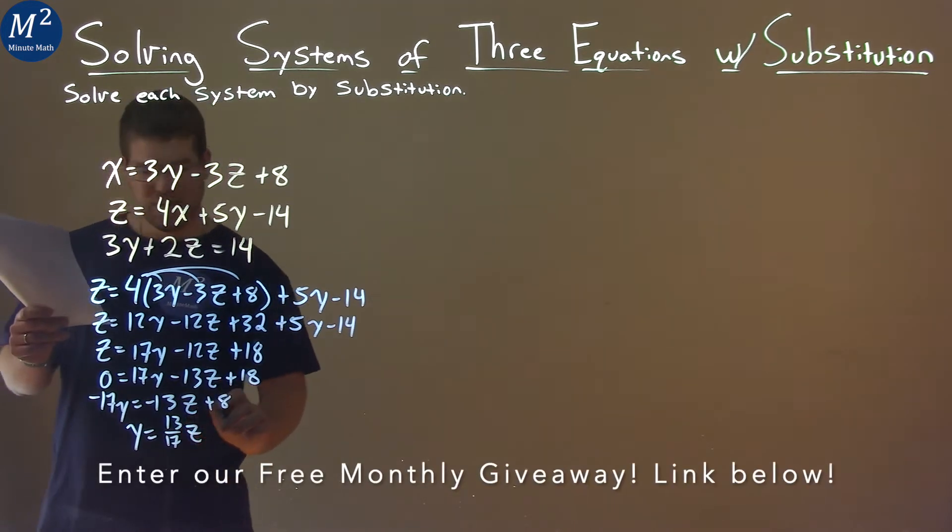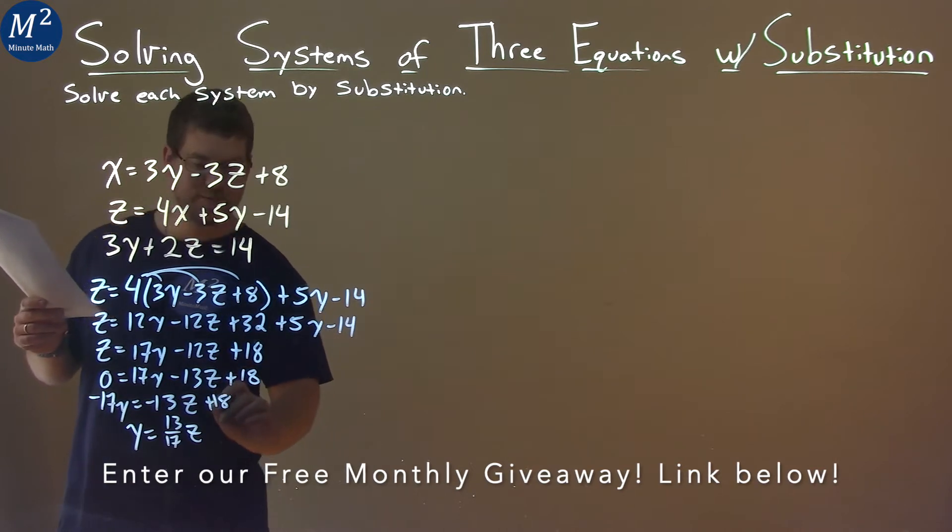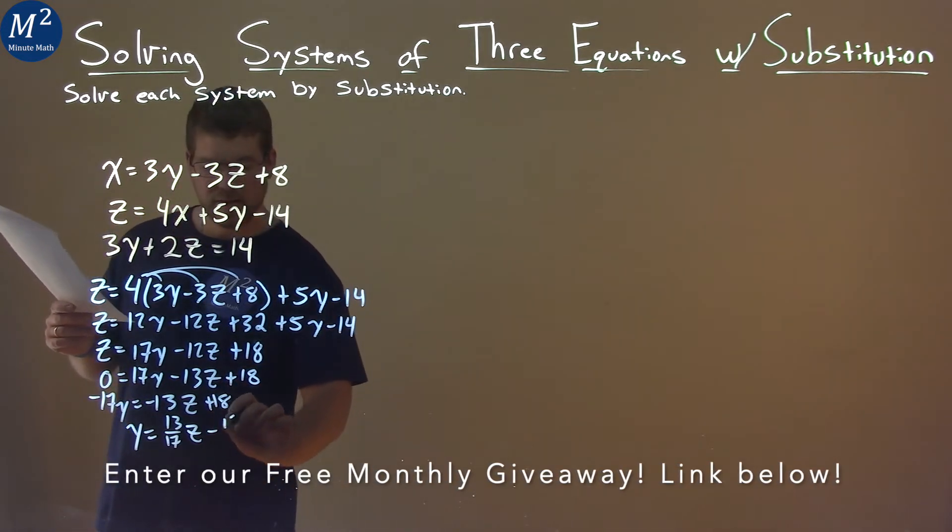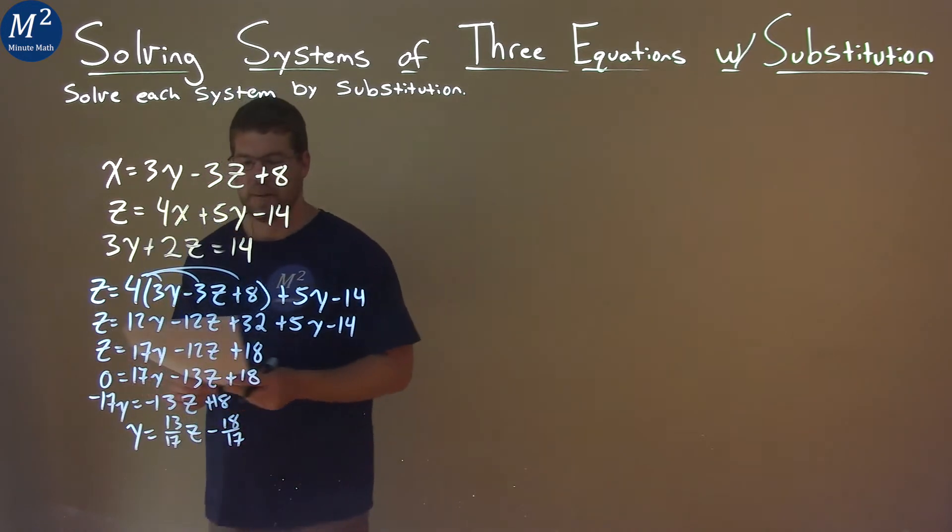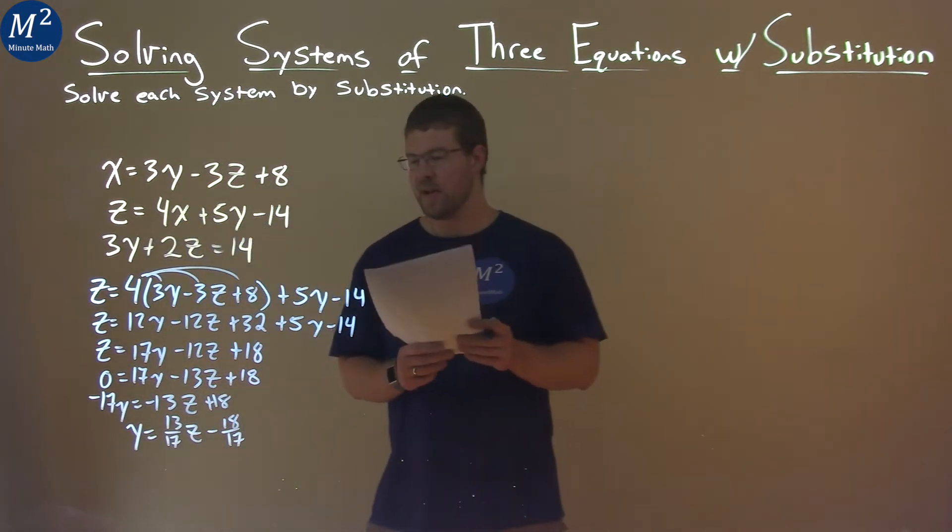And negative 13 divided by negative 17 makes it a positive. So we have positive 13 seventeenths, a z, not 7z, minus, minus, oh, this is 18. Whoops. I messed up there. Minus 18 over 17. All right. So we have y by itself. It's kind of a gnarly equation, but we're going to keep going.